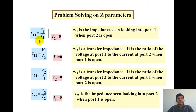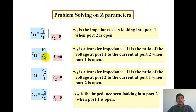Z11 is given by V1 divided by I1 when I2 equals 0, and it is known as the impedance looking into port 1 when port 2 is open. Z12 is V1 divided by I2 when I1 equals 0, meaning it is the transfer impedance — the ratio of voltage at port 1 to current at port 2 when port 1 is open-circuited.